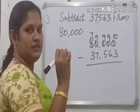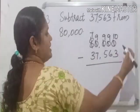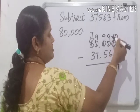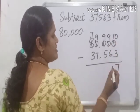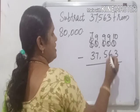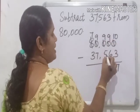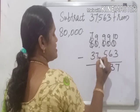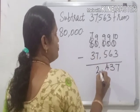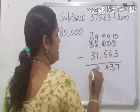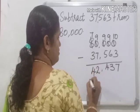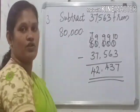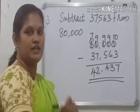10 minus 3 is 7. 9 minus 6 is 3. 9 minus 5 is 4. 9 minus 7 is 2. 7 minus 3 is 4. So 42,437 is the difference.